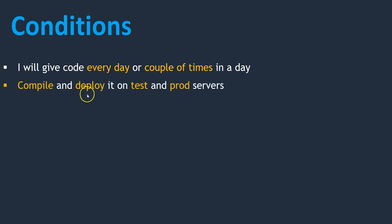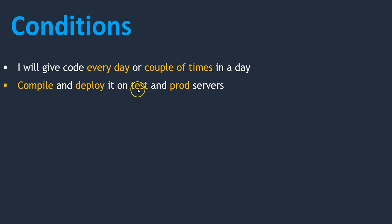The next condition is: compile and deploy it on test and prod servers. Before copying code onto the server, we need to compile it and deploy it on test servers first, then onto production. There are different environments — test environment and production environment. This means we need to compile and deploy code every day on both test and production environments. If it's only once, it's manageable, but for multiple times, we need to think about automation and tools.